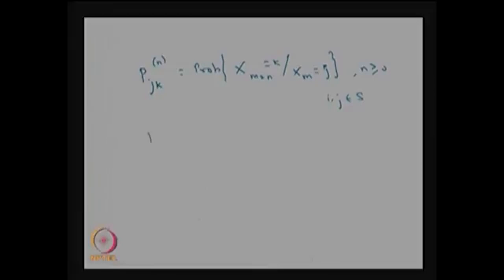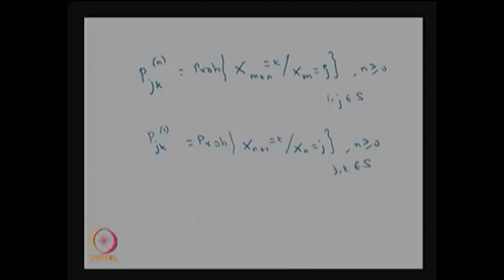We also discussed in the last class the one-step transition probability p(j,k). We can write it with superscript 1 in brackets, or remove it. That is the probability that the system will be in state k at step n+1 given that it was in state j at step n, where j, k belong to S. This is the one-step transition probability.